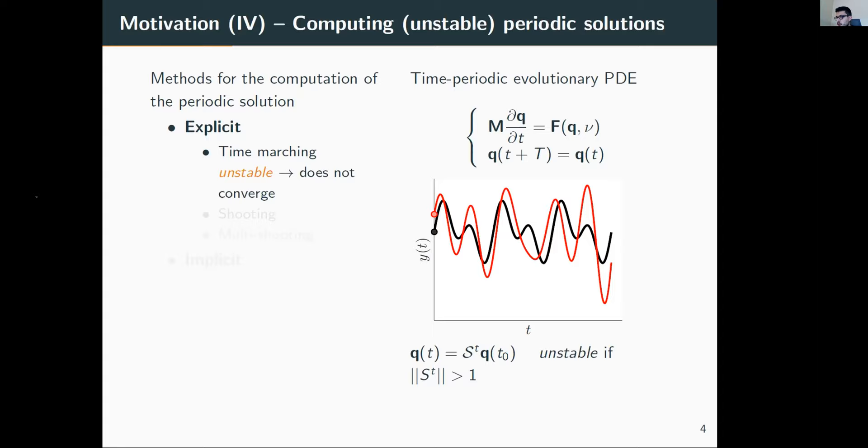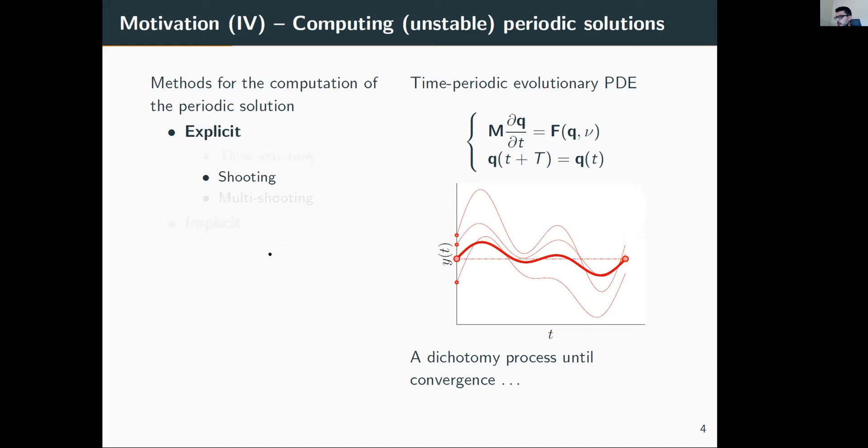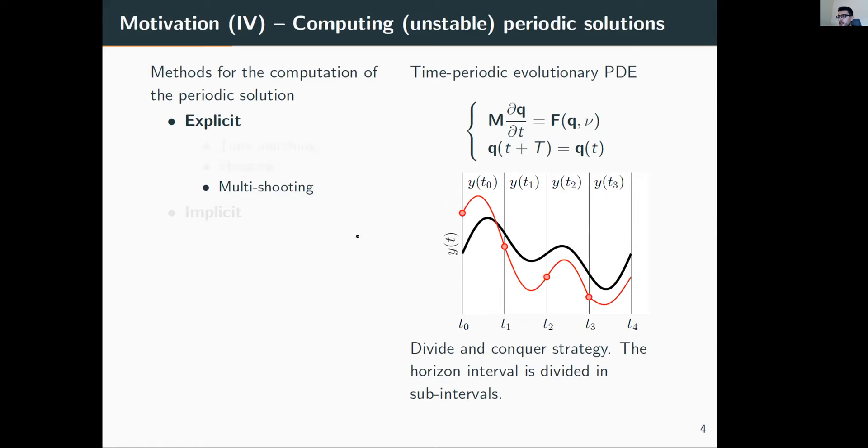Another possibility is using the shooting method—we solve the boundary value problem using a dichotomy process to update the initial condition. However, shooting is not very suitable for systems with large degrees of freedom. Instead, we use a divide-and-conquer strategy, dividing the time domain into many subintervals and employing the shooting technique for each. Again, if the system is unstable, we need to stabilize it artificially.